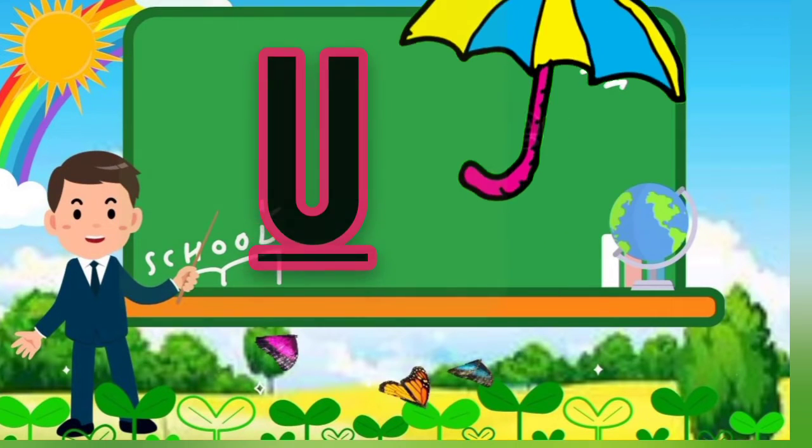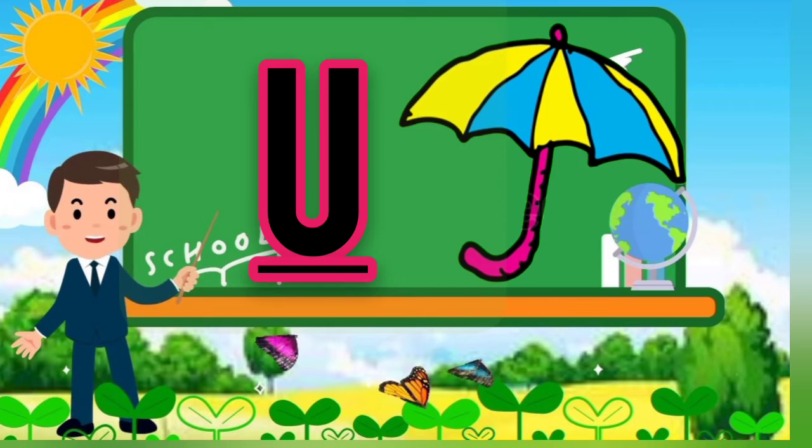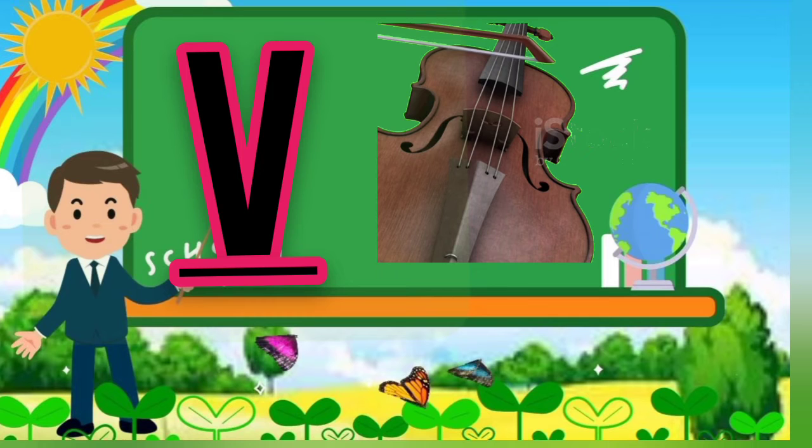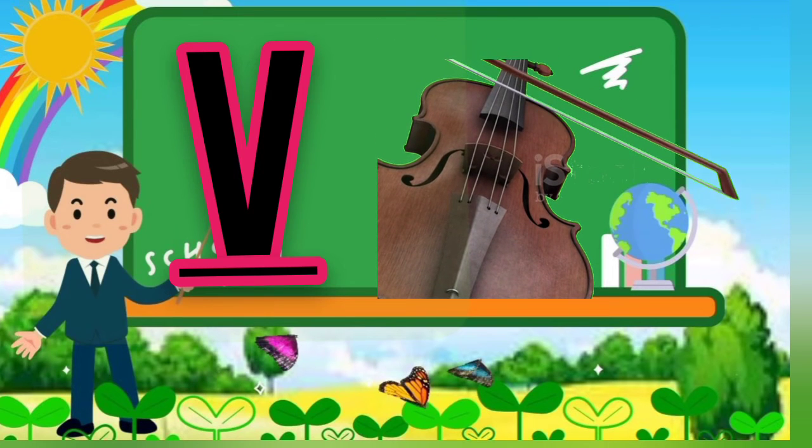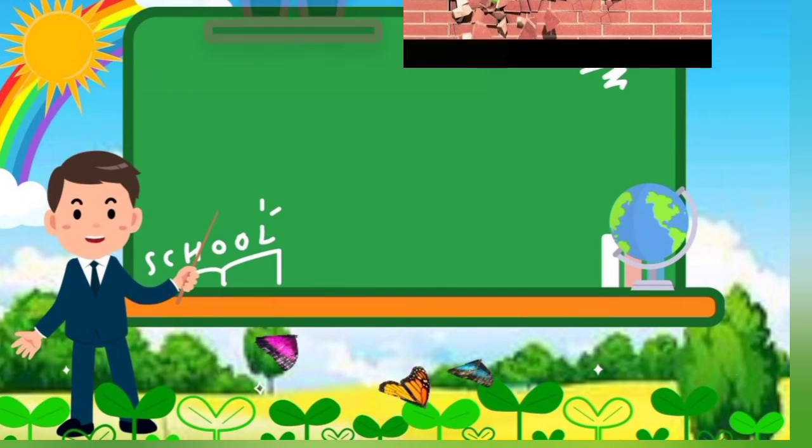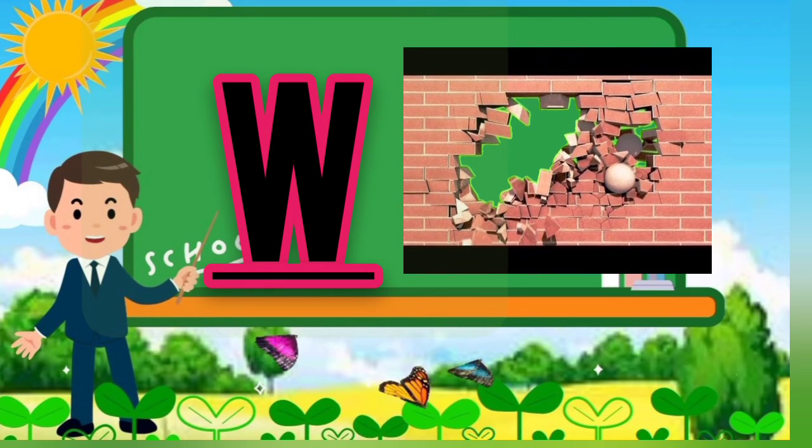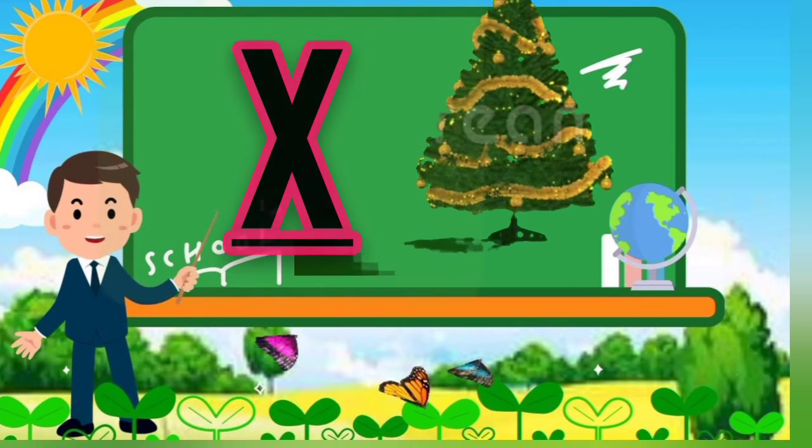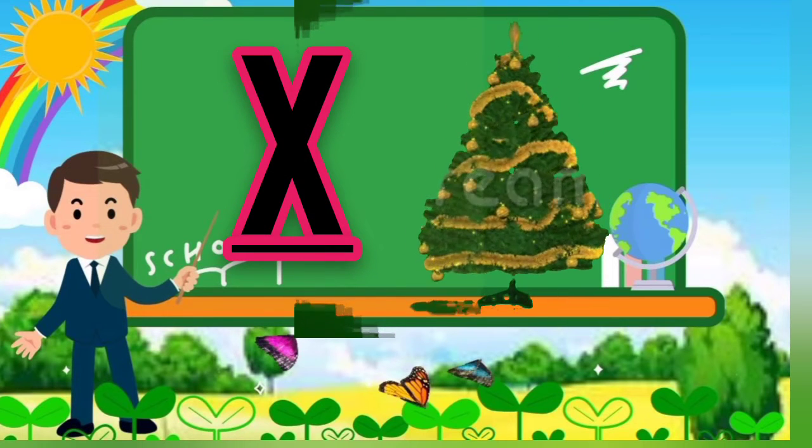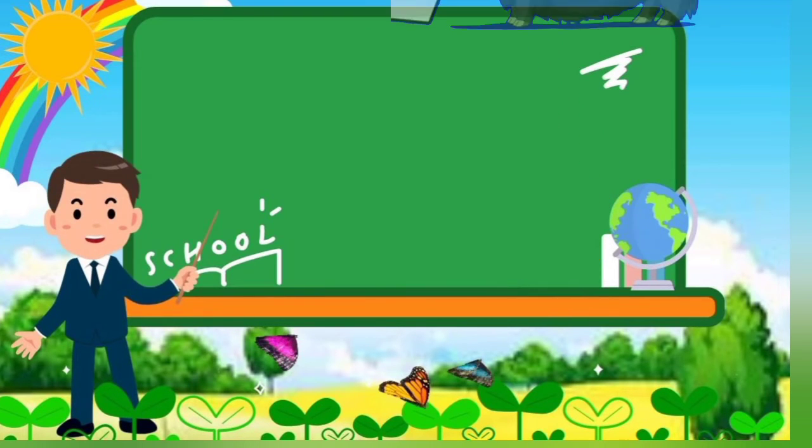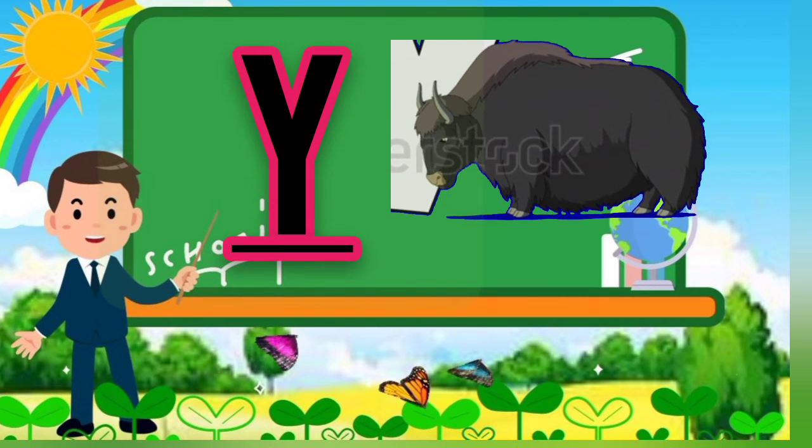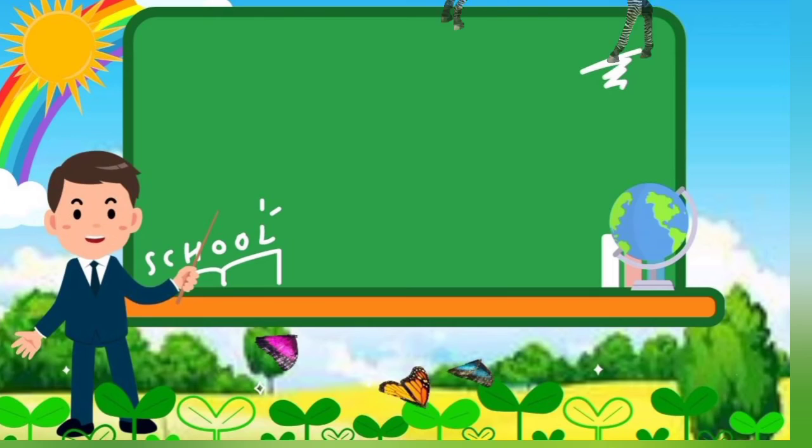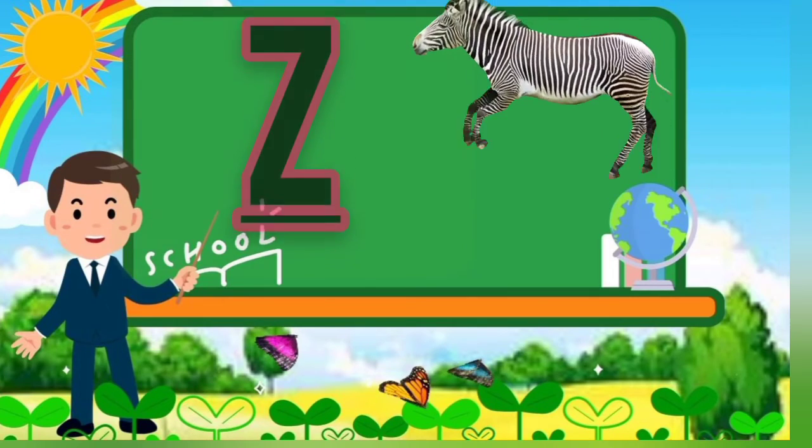U, U for umbrella, V, V for violin, W, W for wall, X, X for xylophone, Y, Y for yak, Z, Z for zebra.